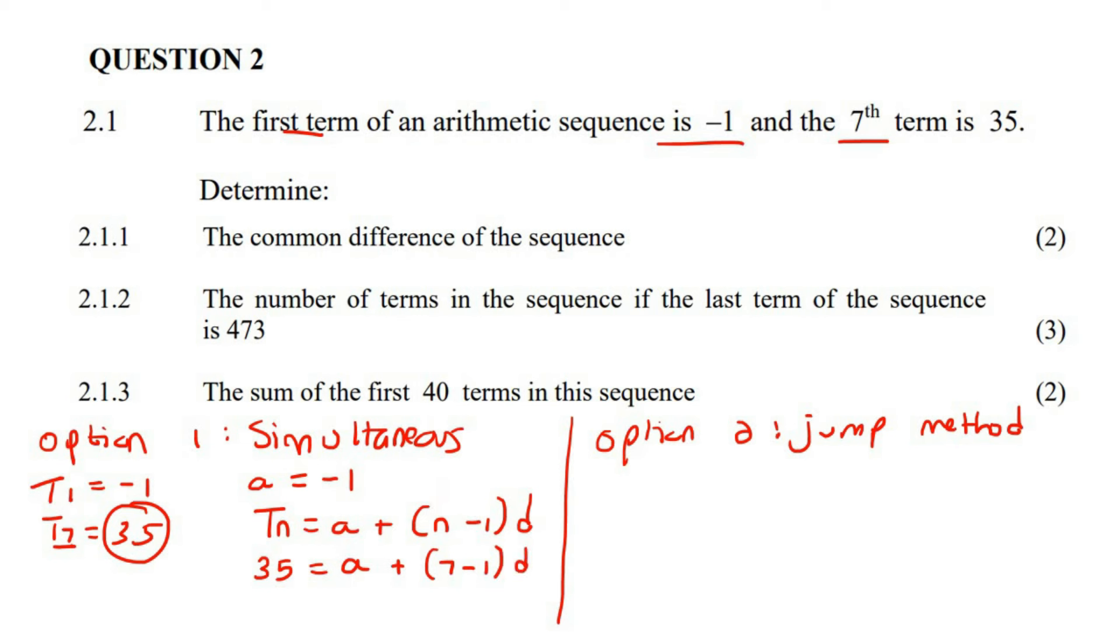Now here's where we use simultaneous. A is negative 1, so we can put that over there. So we get 35 equals to negative 1. 7 minus 1 is 6. If you solve this equation, you should eventually end up with D equals to 6.